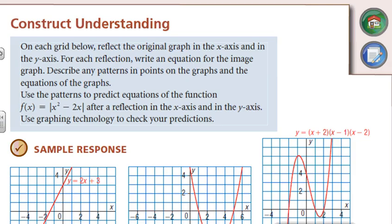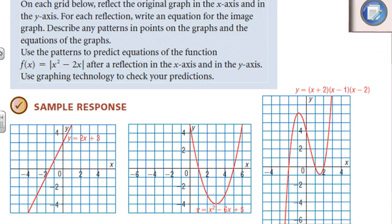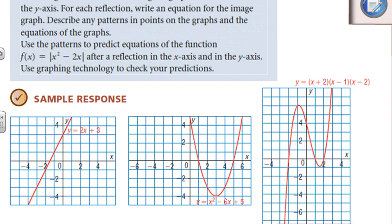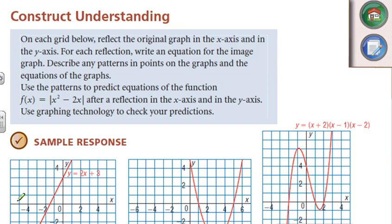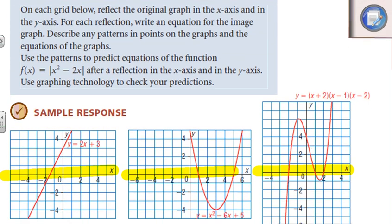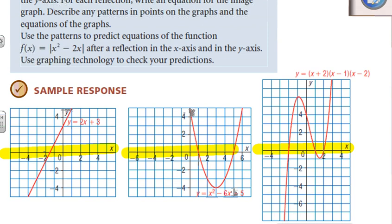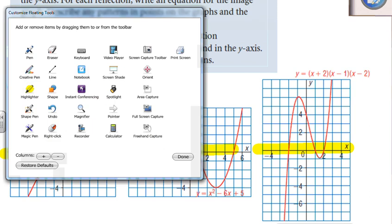Now going from just flipping the points, we're going to flip the whole graph. So every single point is going to flip over the axes. For the first one, we're going to do over the x-axis. Let's highlight every x-axis — all three of them. If we flip in the x-axis, anything that's above is now going to be below, and anything below is now going to be above. The place that's going to stay the same is where it's on that axis — that's our invariant point. Let's take some key points such as our y-intercept.